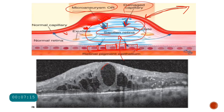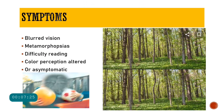This OCT image shows various fluid accumulation — this is actually a cystoid macular edema pattern in a patient with diabetic macular edema or diabetic retinopathy.